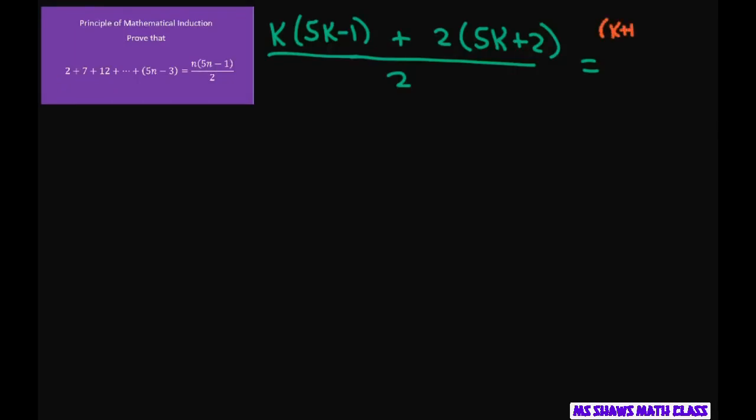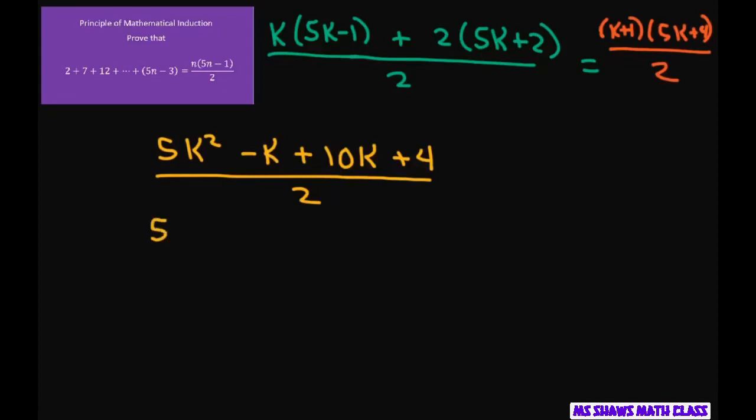So all I have to do, let's simplify the numerator, and we're going to get 5k squared minus k plus 10k plus 4 divided by 2. So this is going to give us 5k squared plus 9k plus 4 divided by 2.